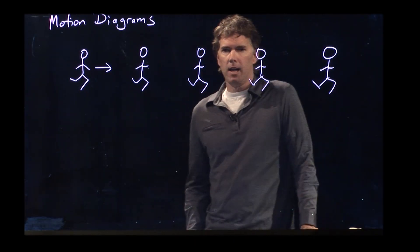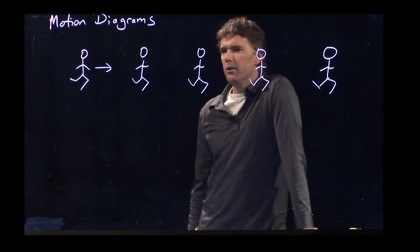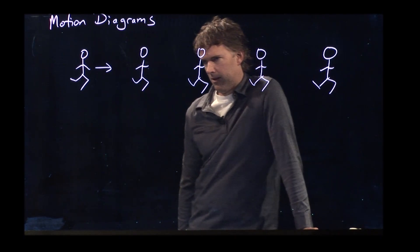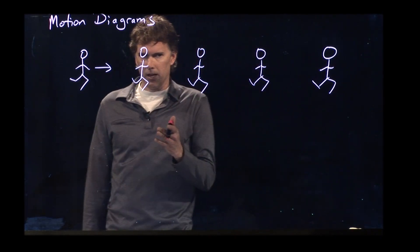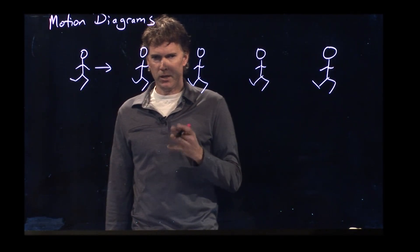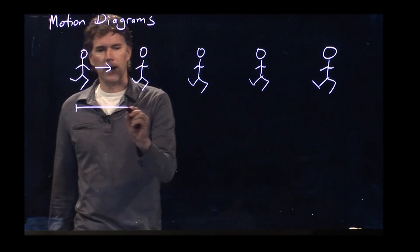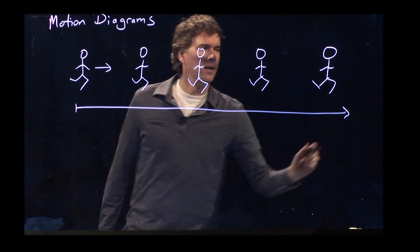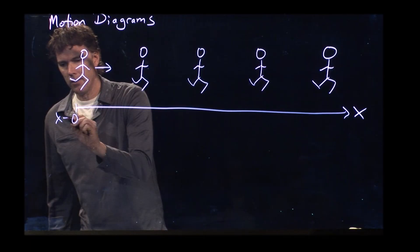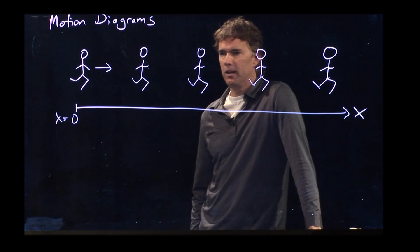Looking at this, you already have a lot of information. Is their position increasing or decreasing? Increasing. Somebody said increasing, but they hesitated. Why did they hesitate? Because we didn't decide which direction was positive or negative — you have to do that first. Let's say that positive is to the right and they start at x equals zero. Their position is increasing.